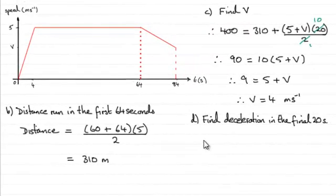Now in part d, we're asked to find the deceleration of the girl in the final 20 seconds. So that's going to be represented by this part of the graph here.